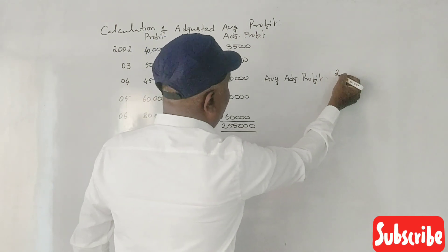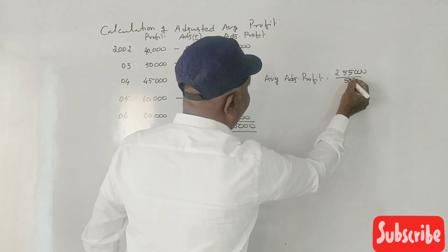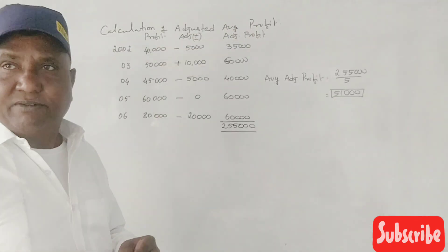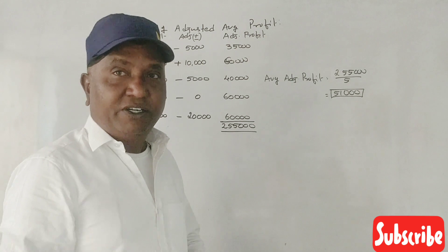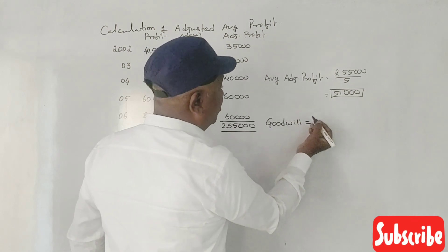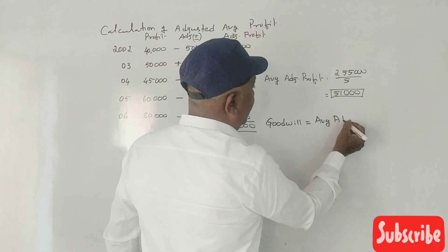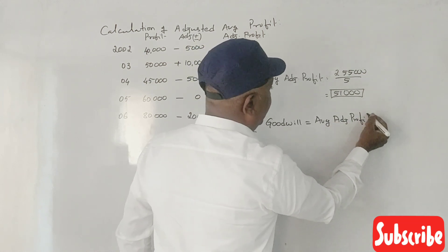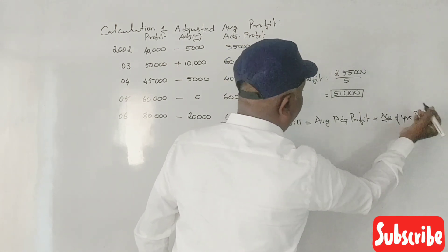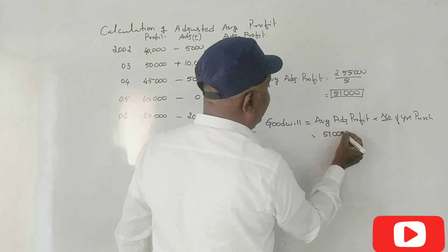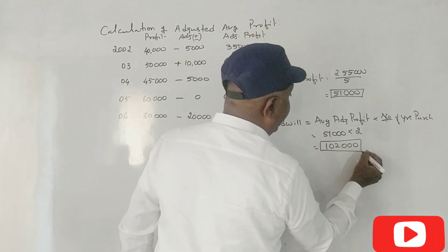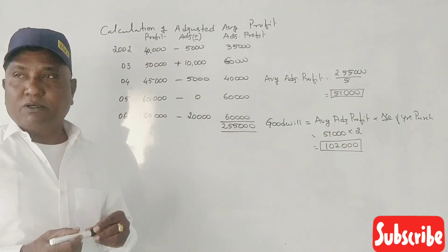The average adjusted profit is 2,55,000 divided by 5 years, which equals 51,000. Goodwill is equal to average adjusted profit multiplied by number of years of purchase: 51,000 into 2 = 1,02,000. So, this is the goodwill. That's the answer.